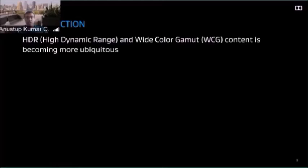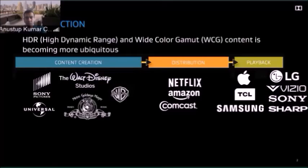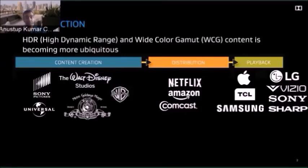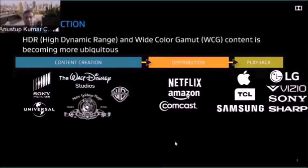High dynamic range and wide color gamut not only allow for a more accurate simulation of aesthetic presentation, they have become quite mainstream in the content ecosystem. Through the entire pipeline — from content creation, through distribution, through playback — HDR is being produced by top studios such as Disney and Universal, distributed by Netflix, Amazon, and Comcast, and consumed on tens of millions of devices by Apple, LG, Samsung, and others. Consequently, evaluating HDR systems is quite important.